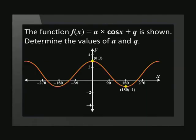Let's see how we can determine the equation if we are given a graph. Here the function f of x is equal to a times cos x plus q is shown. Determine the values of a and q. Looking at the shape, we can tell that the function is a positive cosine graph. We begin by writing out the coordinates of our standard cos graph.